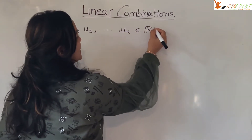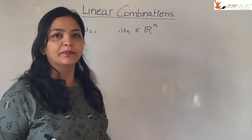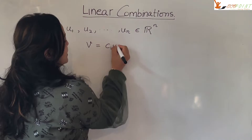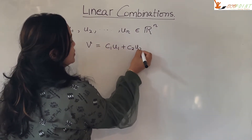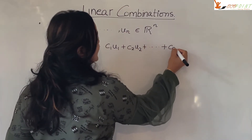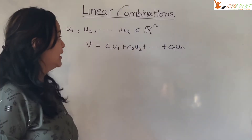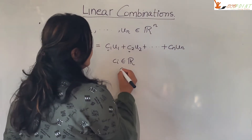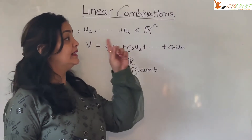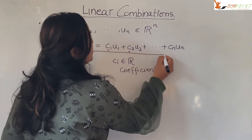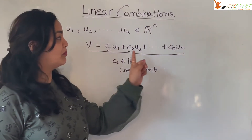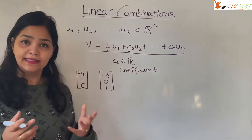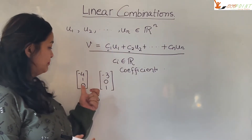These are vectors from R^n, that is the n-dimensional plane. You construct v which is c1·u1 + c2·u2 + ... + cn·un, wherein all these c_i's are some real-valued scalars. They are called the coefficients of the linear combination. This vector v — we would say that v is a linear combination of the vectors u1, u2, and so on up to un.